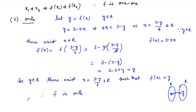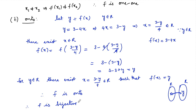Since f is one-to-one and onto, therefore f is bijective — because a function is said to be bijective if it is both one-to-one and onto.